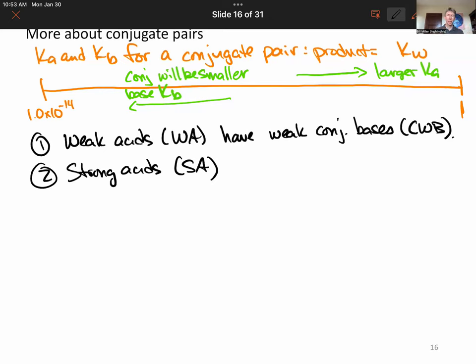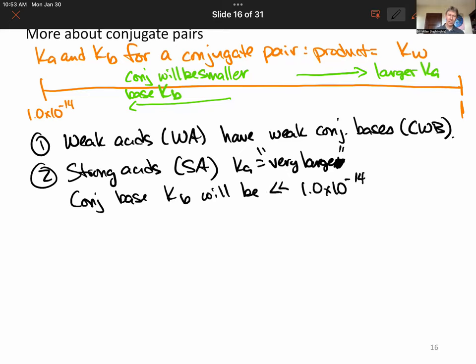So strong acids have very large Ka values. Ka equals very large, much larger than 1. That means that conjugate base KB will be less than 1.0 times 10 to the minus 14. And in fact, usually much less. That's a double less than sign, which means much less than. And so we will come up with a name for this. When you have a strong acid, the conjugate base will be very weak.